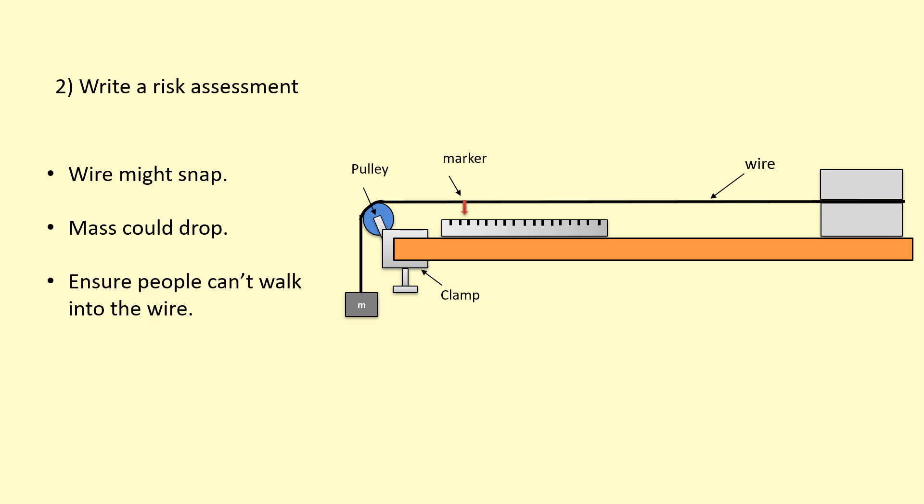How are you going to ensure people don't walk into the wire? For example, in my class we use a really long wire, maybe three, four meters, so we go across multiple tables. How are you going to ensure that people don't walk into that wire because it's a very thin wire they might not be able to see it?